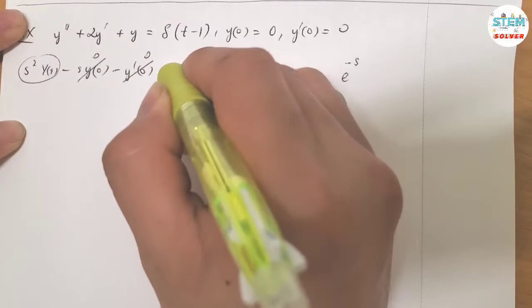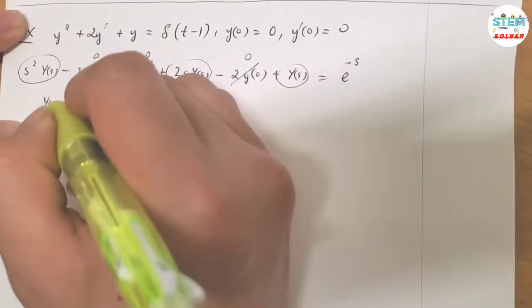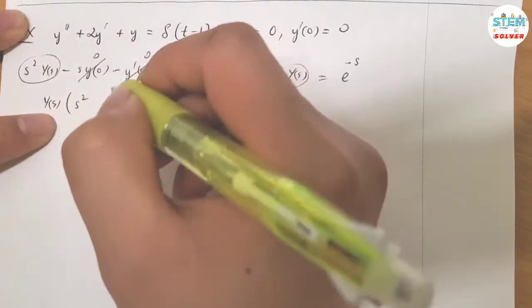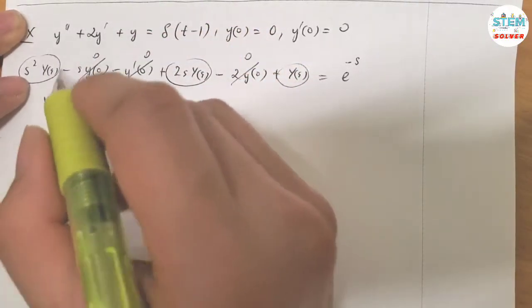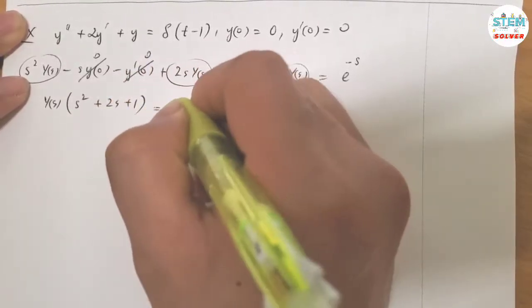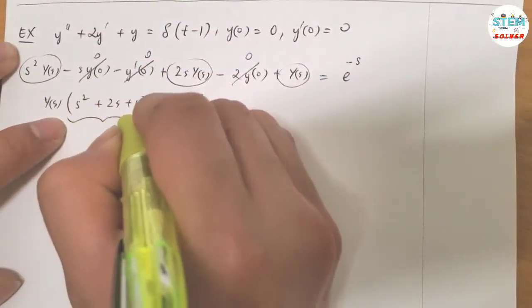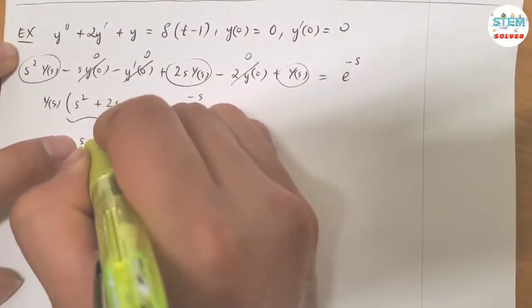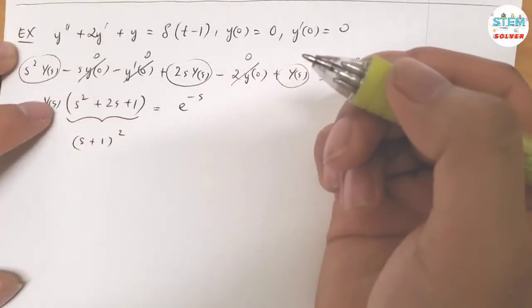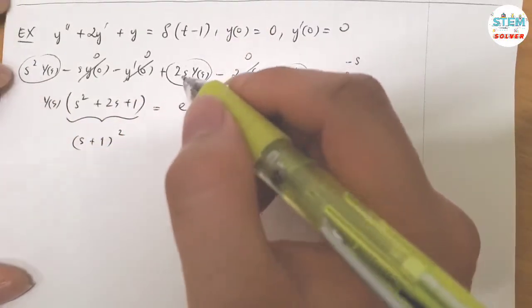So you're left with all capital Y of S's, and I'm going to factor out capital Y of S and put it in parentheses. S squared plus 2S plus 1 equals E to the negative S. So this is a perfect square and it can be written as S plus 1 squared. If you're not sure, you can multiply this out and it will give you this one.